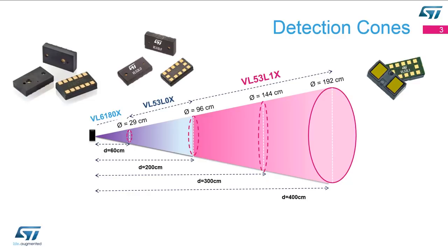We have three different products currently available on the open market. The first one is the VL6180X, the second one is the VL53L0X, and the last one is the VL53L1X. They all have different range capabilities from 10 or 20 centimeters all the way out to 4 meters, so depending on the application we should have a device ranging to the needs that you have.